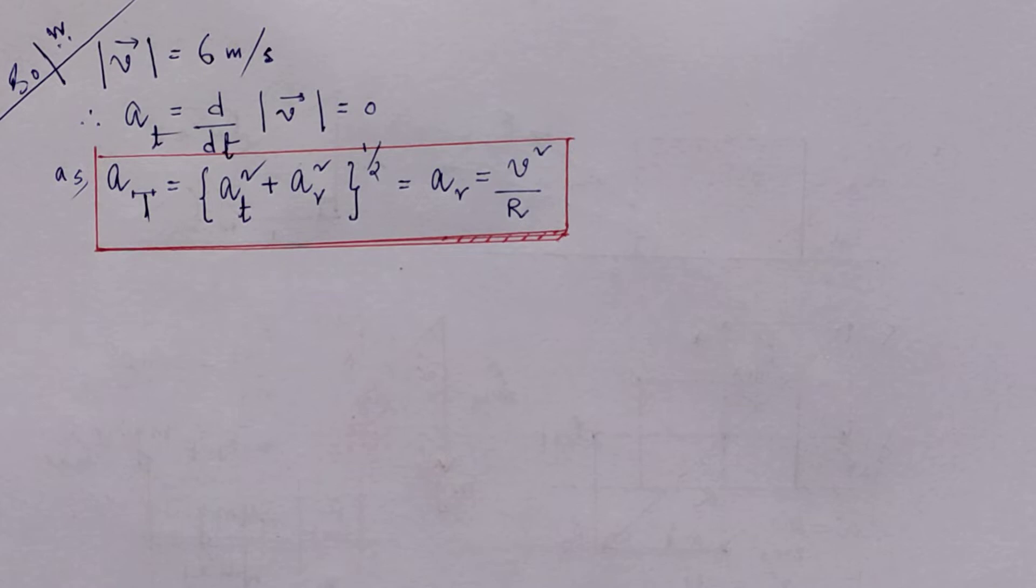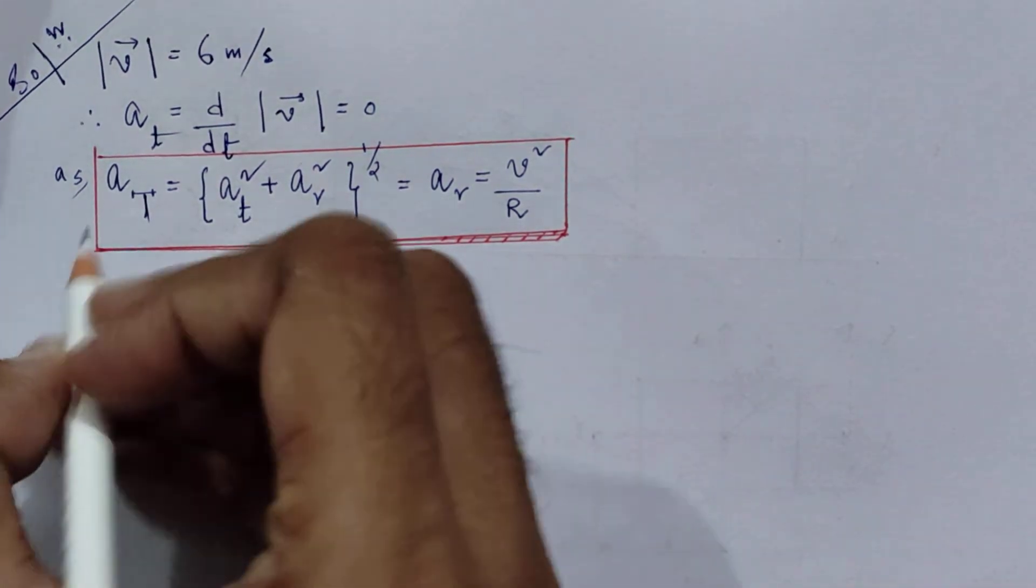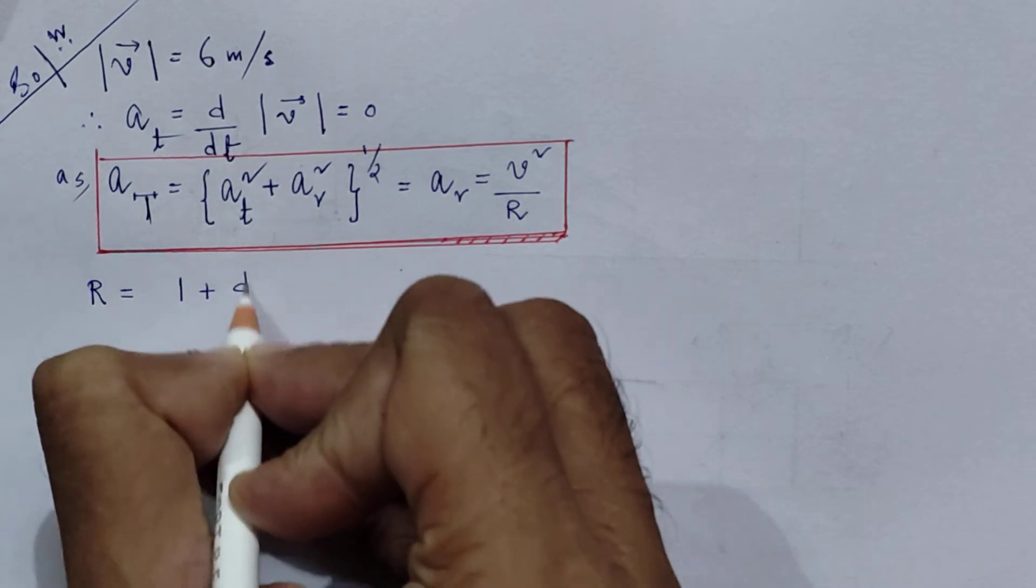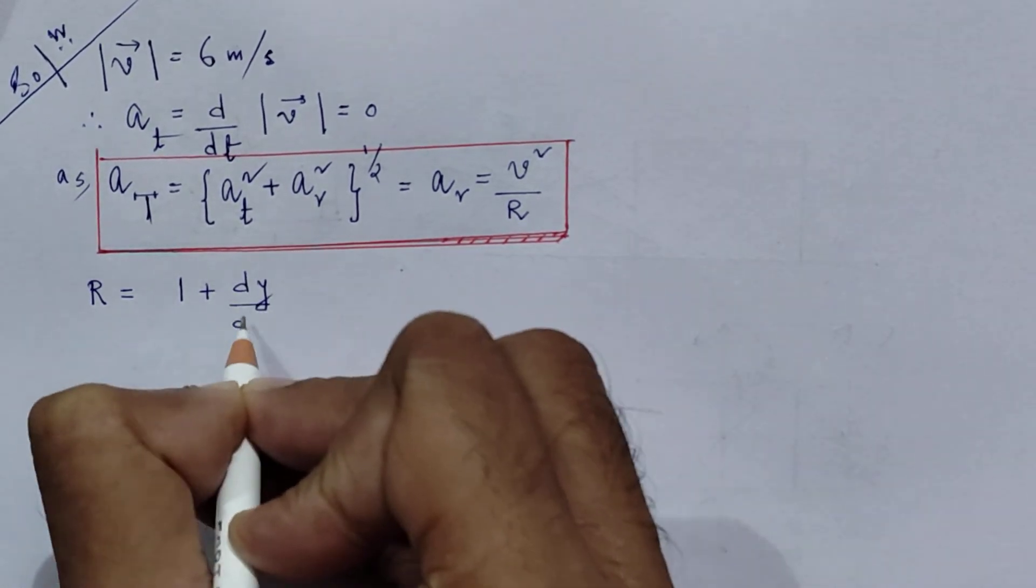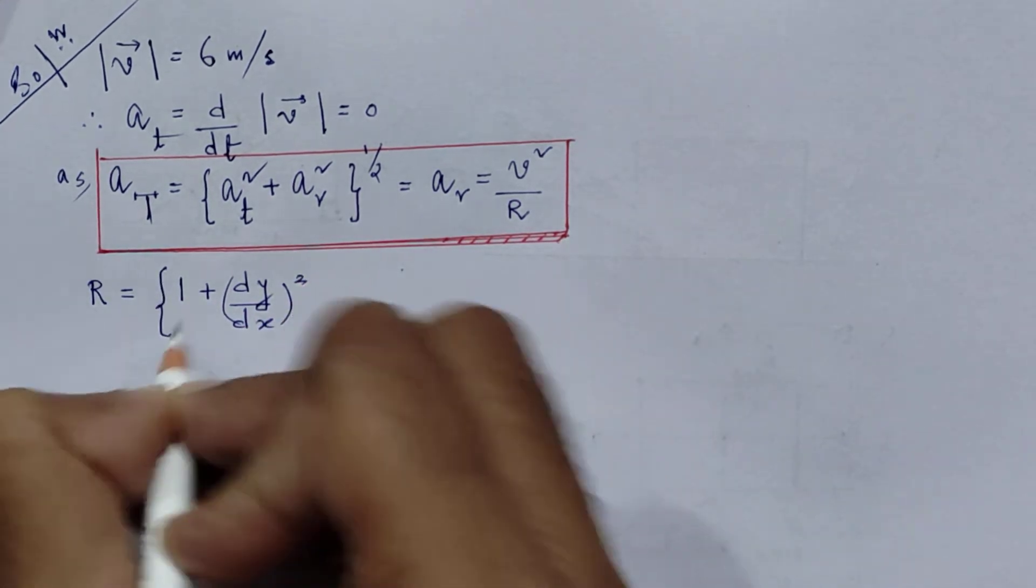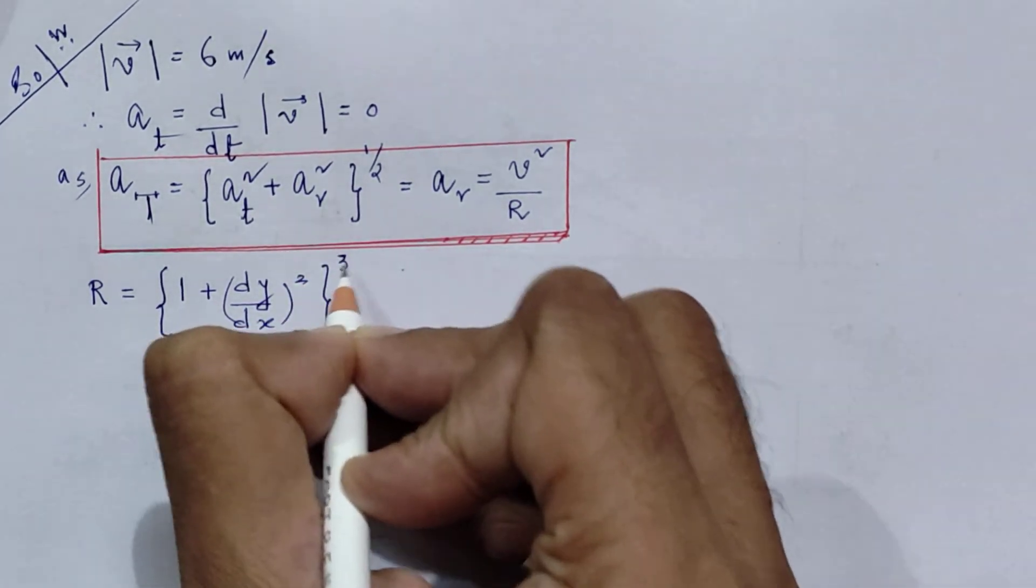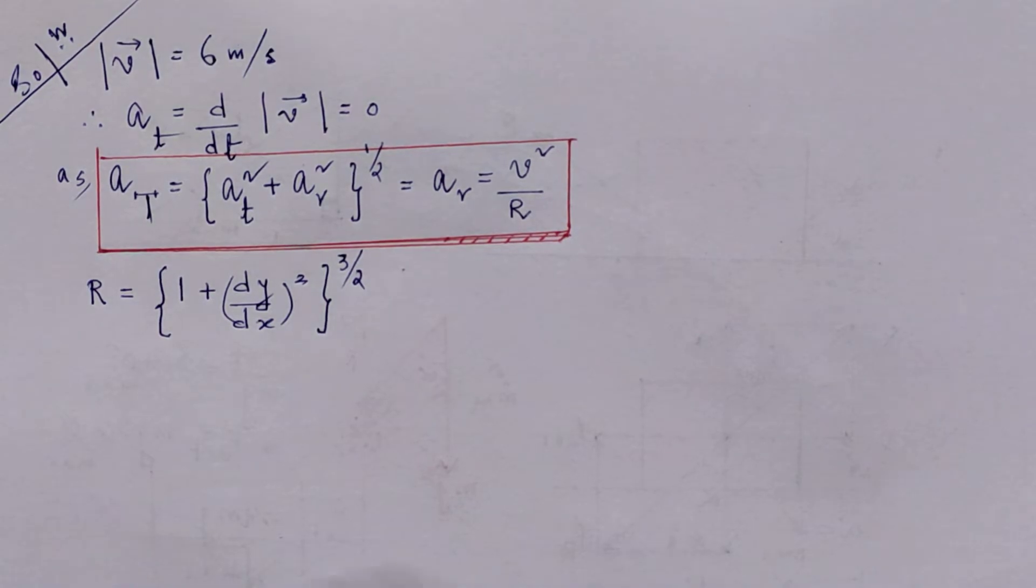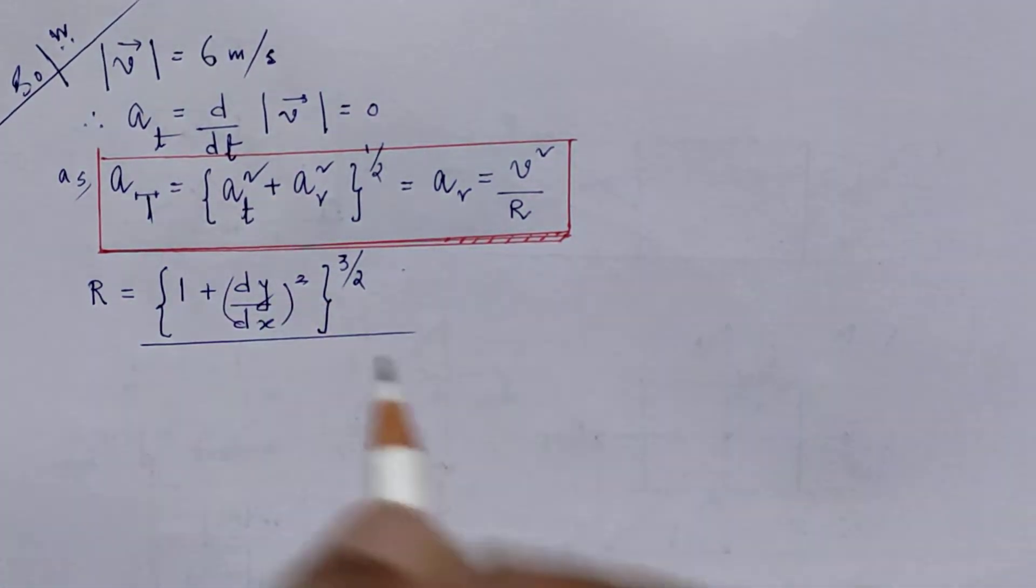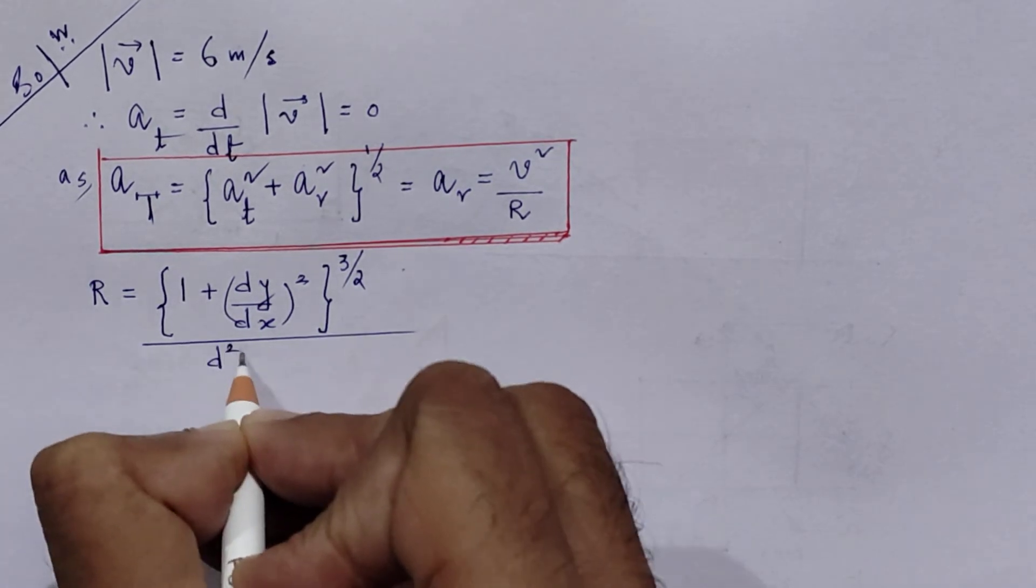So this is the radius of curvature of the parabolic trajectory at that mentioned point. Now what is this capital R? R is equals to (1 plus (dy/dx)²) to the power 3/2 divided by d²y/dx².